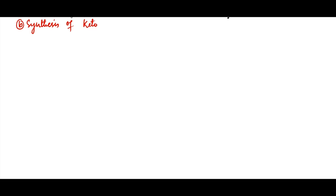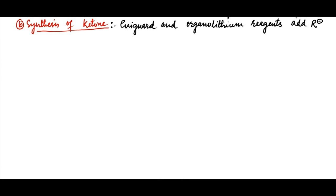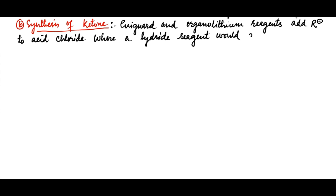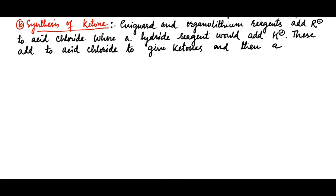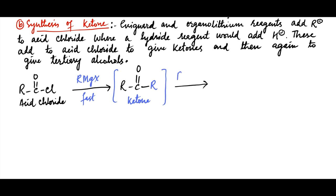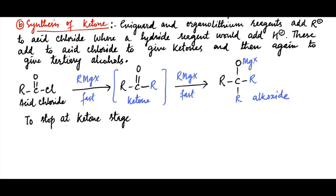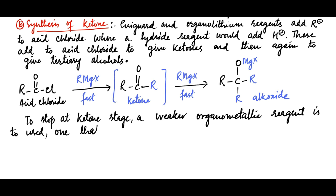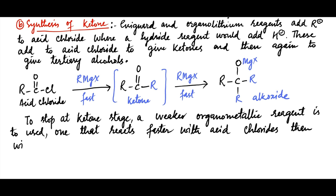Now the synthesis of ketones. Grignard and organolithium reagents add R- to acid chlorides, where a hydride reagent would add H-. These add to acid chlorides to give ketones, and then again to the ketones to give tertiary alcohols. For example, the addition of a Grignard reagent to an acid chloride forms a ketone, to which another molecule of Grignard reagent quickly adds to form the magnesium salt of a tertiary alkoxide. To stop at the ketone stage, a weaker organometallic reagent is needed — one that reacts faster with acid chlorides than with ketones.